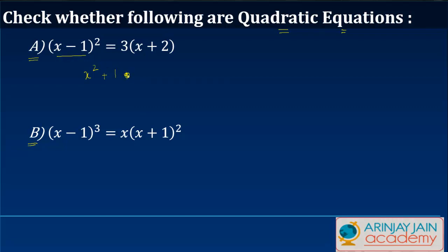No. It cannot be plus. It has to be minus 2ab, minus 2 times x times 1 is equal to 3 into x gives you 3x plus 3 times 2 gives you 6. So you get x square plus 1 minus 2x. Take these to the other side, minus 3x minus 6 is equal to 0. Or you get x square minus 5x minus 5x minus 6 plus 1 gives you minus 5 is equal to 0.